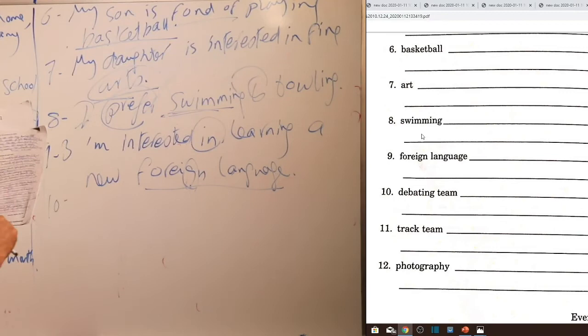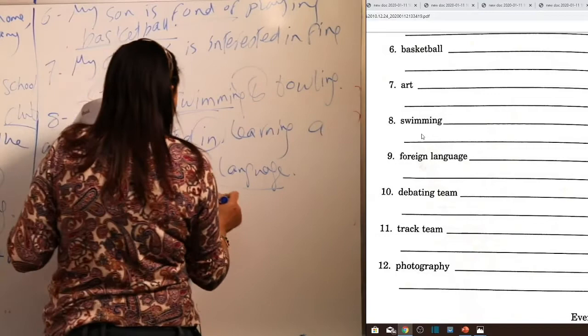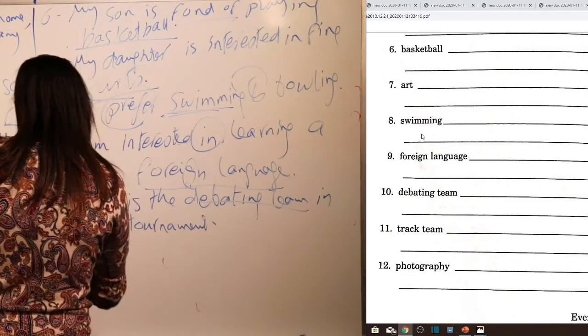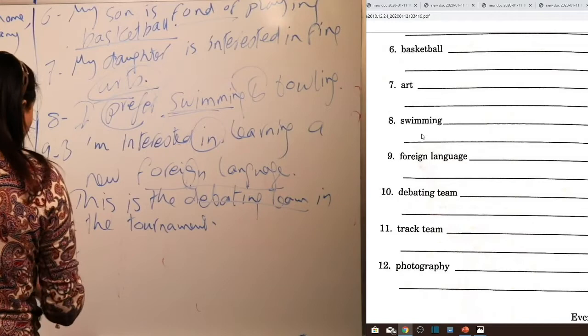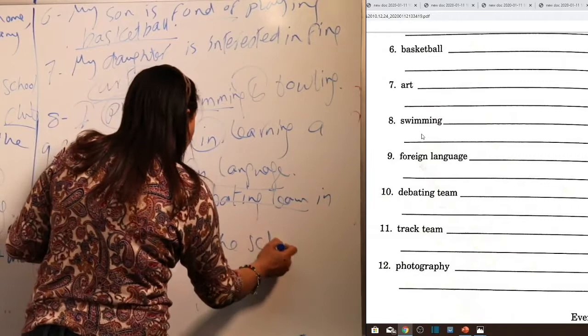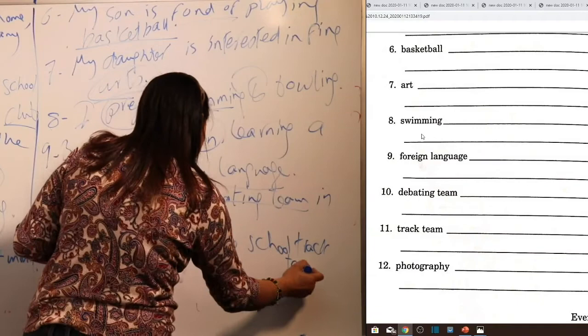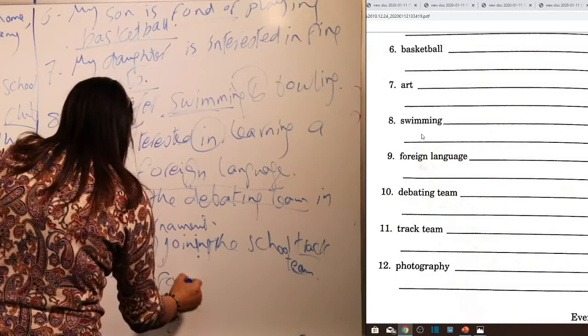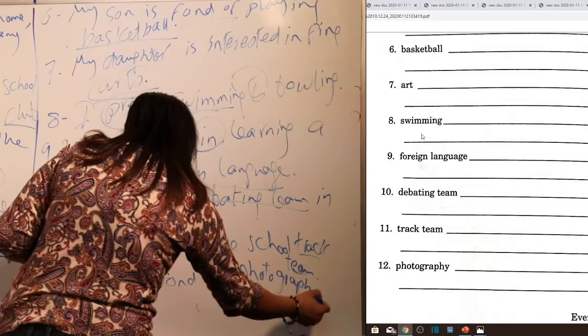Word ten — debating team: 'This is the debating team to us in the tournament.' Word eleven — track team: 'I think of joining the school track team.' 'Think of' is followed by a gerund (-ing form). Word twelve — photography: 'I'm fond of photography.' So 'fond of photography' — being passionate about taking photos. Now let's turn to page 13.